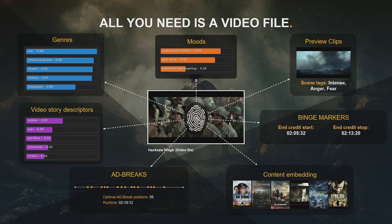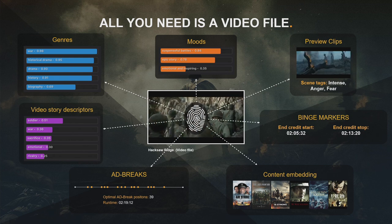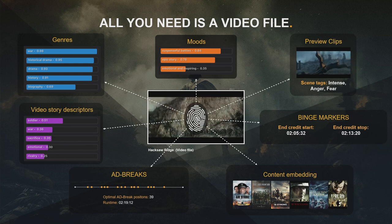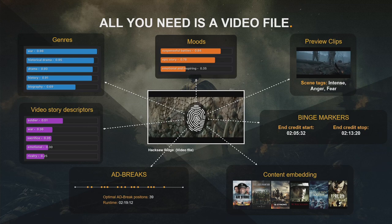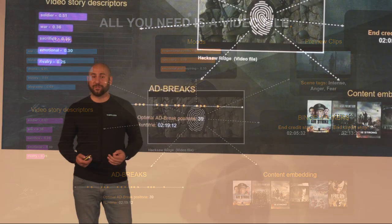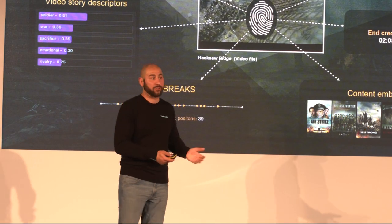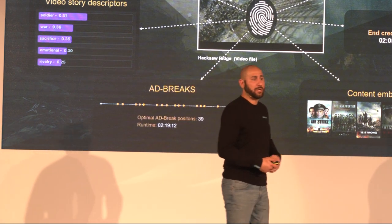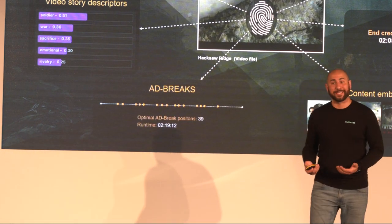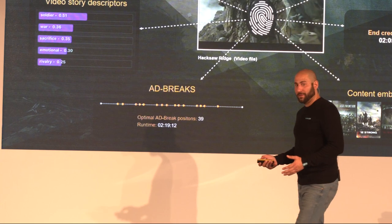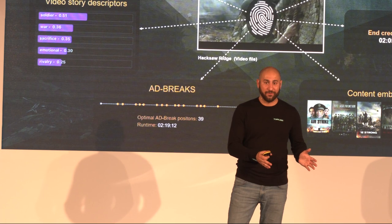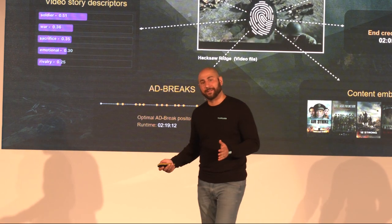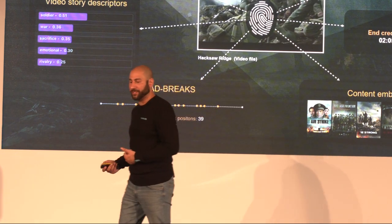It can generate preview clips — small scenes that all of us have seen on Netflix, where as soon as you hover above an image it starts playing a clip. It can generate tags to those small scenes so we know one scene is more joyful and another is more fearful or sad. And remember: this is all done by a computer watching a movie and doing all of this automatically. That's how far AI has advanced today.